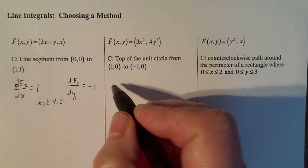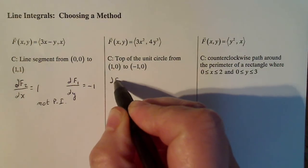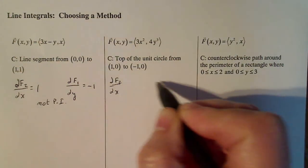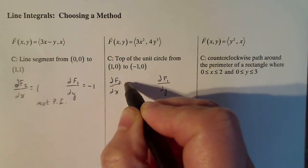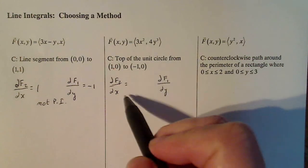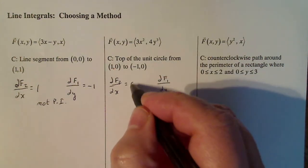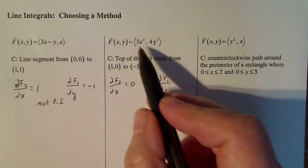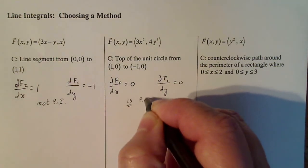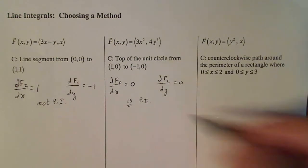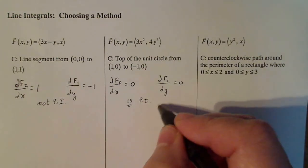Now I come over to this one, I'm going to take the partial of f2 with respect to x, and then the partial of f1 with respect to y. And I get the partial of f2 with respect to x is 0. The partial of f1 with respect to y is 0. So this one is path independent. That means we can use the fundamental theorem of line integrals on this one.